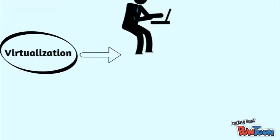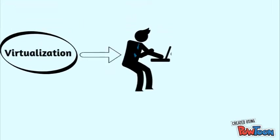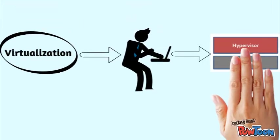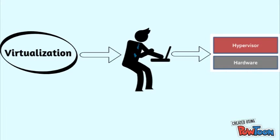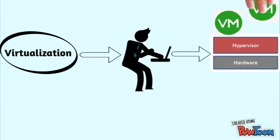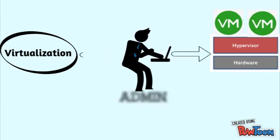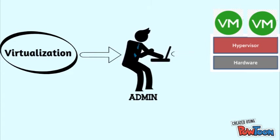With virtualization, you have a human being that needs to interact with the hypervisor to create virtual machines. You need one of your admins to manually go in there and create and manage virtual machines.